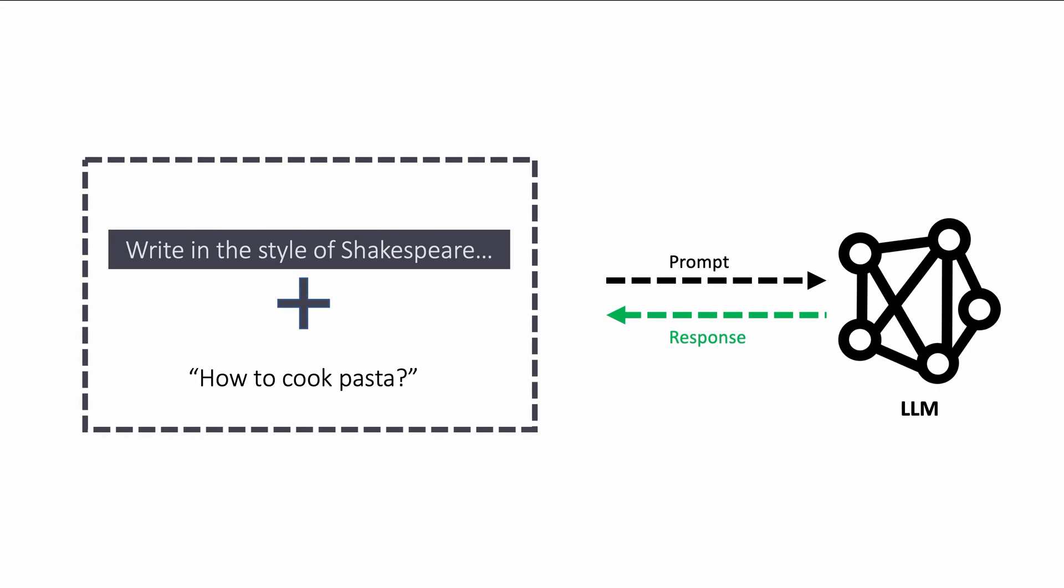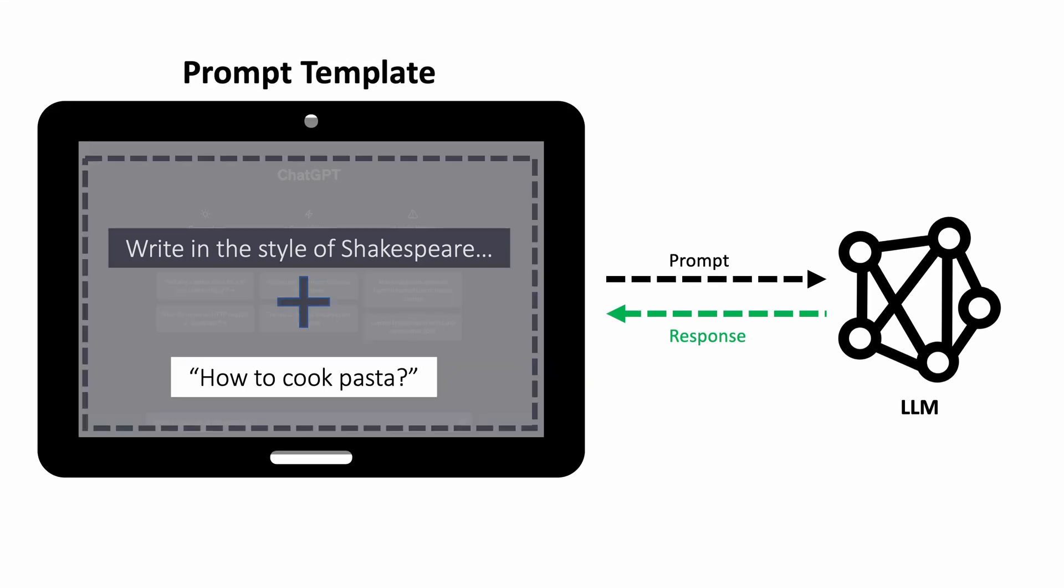This technique of combining user input with a base prompt can be easily achieved in Langchain using a concept called prompt template. Prompt templates are quite powerful in the sense that you can give specific instructions to an LLM as how to behave or how to respond to the prompt. You can say something like you are a helpful assistant or you are an expert in the area. These will change the response back from LLM drastically.